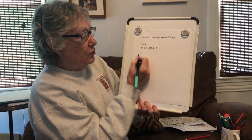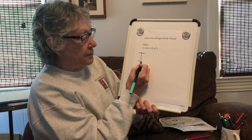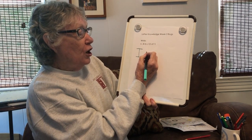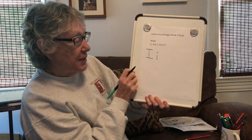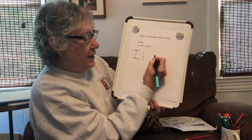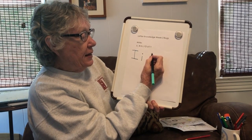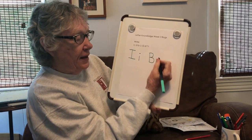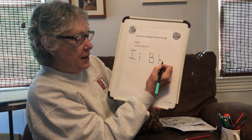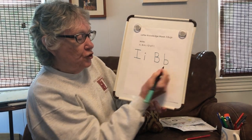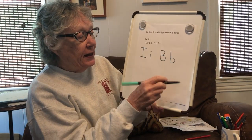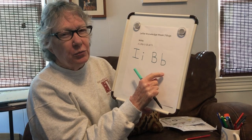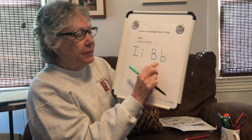Here is my capital I and my lowercase I. Here is my capital B and lowercase B. A trick I like to show everybody is when you're writing the lowercase B, so you don't confuse it with the D.